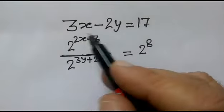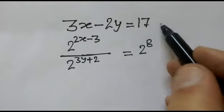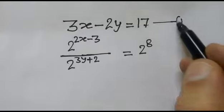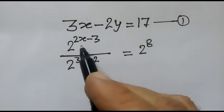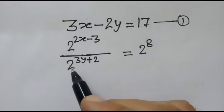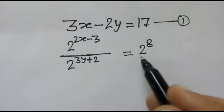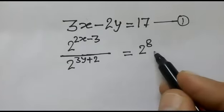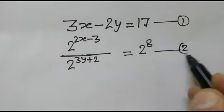The first equation is: 3x minus 2y is equal to 17 — equation number one. The second equation is: 2 to the power (2x minus 3) over 2 to the power (3y plus 2) is equal to 2 to the power 8 — equation number two.